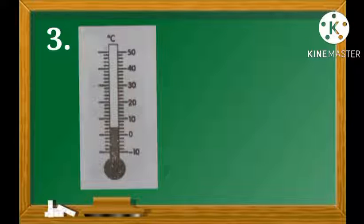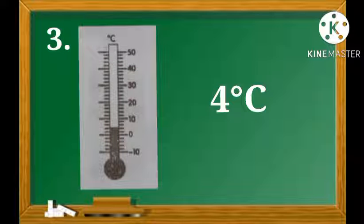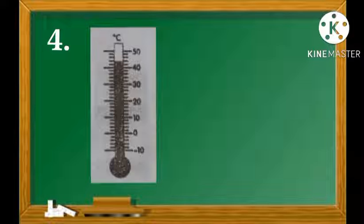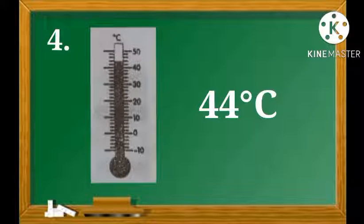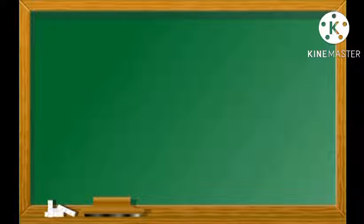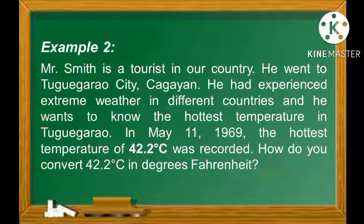Number 3: What is the temperature reading shown in the thermometer? If you answer 4 degrees Celsius, that's correct. And number 4: what's the reading in this thermometer? You are right if you answer 44 degrees Celsius. Well done, kids, for participating in this activity!